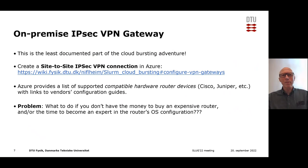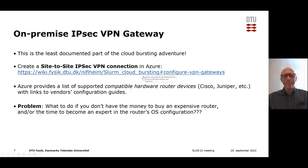Now you create an on-premise IPSec gateway, which is going to communicate with the Azure cloud service. This part of the adventure is the least documented and has taken me the most time to work out. At this link you can see how to create a site-to-site — that is, subnet-to-subnet — VPN connection between on-premise and Azure. Azure does support a number of compatible hardware router devices from Cisco, Juniper, and a number of others, and also gives links to the vendor's configuration guides. But what if you don't have the money to buy such an expensive router?